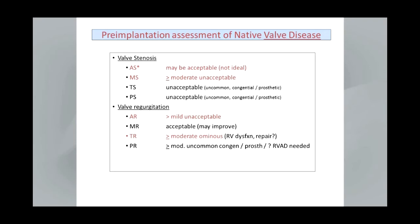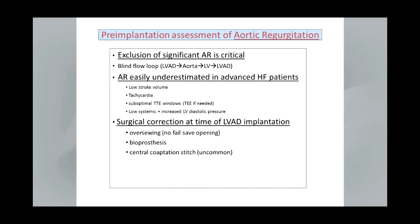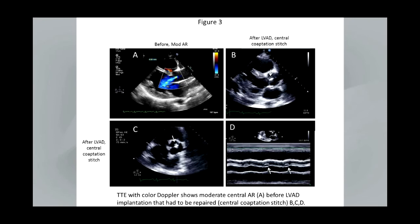More than moderate tricuspid regurgitation is an ominous sign because it may reflect RV dysfunction. When it comes to aortic regurgitation, surgical correction at the time of LVAD implantation is usually recommended if it's significant. Over-sewing of the native valve can be done, although there's no fail-safe opening. A bioprosthesis can be placed, and also a central coaptation stitch, although few patients are candidates for this. This is pertinent to know in patients that have had LVADs — what may have gone on in surgery and what the echo appearance may look like.